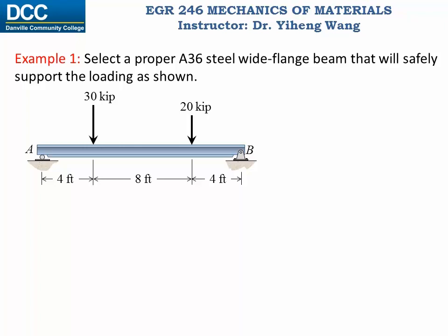Let's look at this example problem directly. In this example we are given a structure with applied loadings. We are told that this beam is made of A36 steel and it is a wide flange beam, and we need to select a proper sectional shape for this beam so it will support the loadings safely.